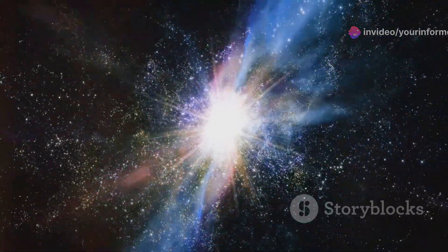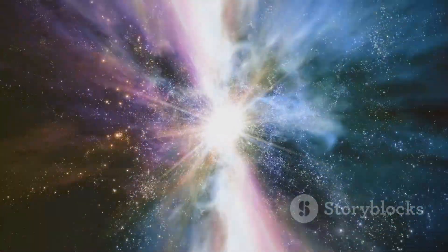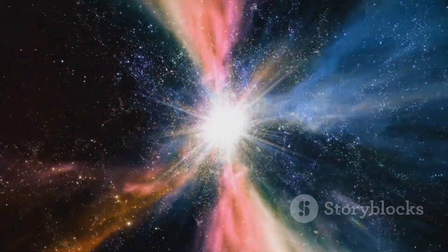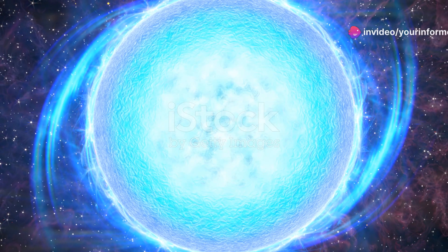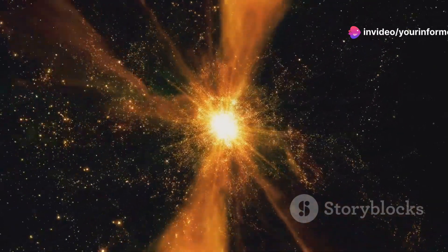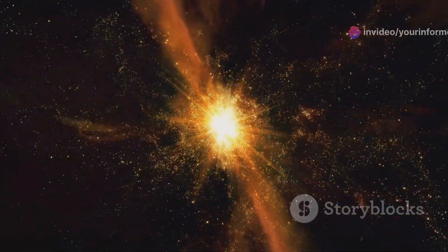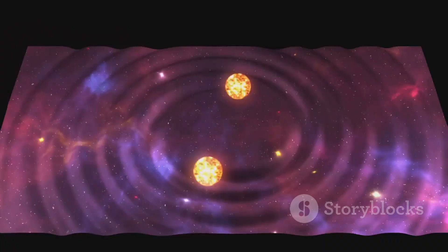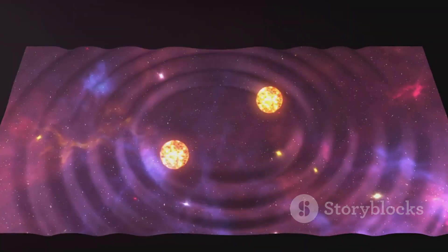When massive stars exhaust their nuclear fuel, they can collapse under their own gravity, resulting in a spectacular supernova explosion. Sometimes this leaves behind an incredibly dense remnant called a neutron star. Neutron stars are fascinating objects, squeezing the mass of our sun into a sphere just a few miles across. When two neutron stars locked in a binary system spiral towards each other, they eventually collide.